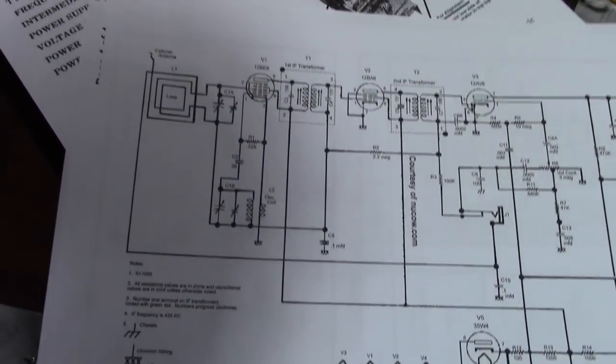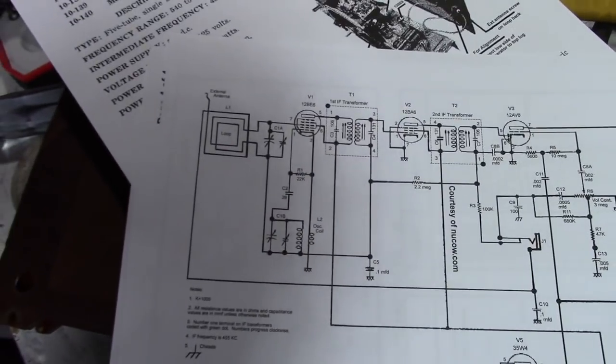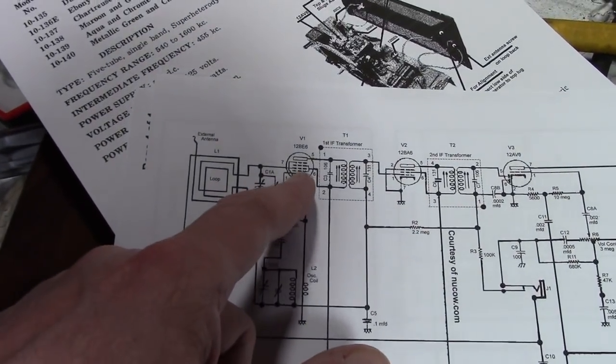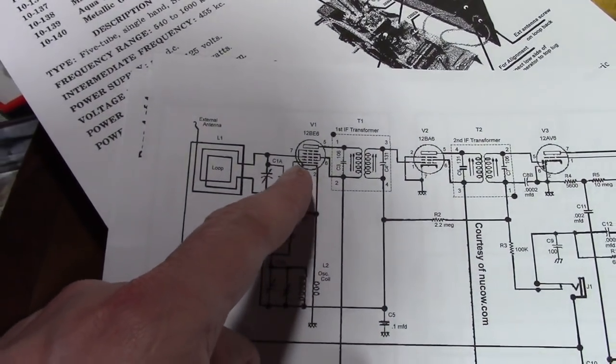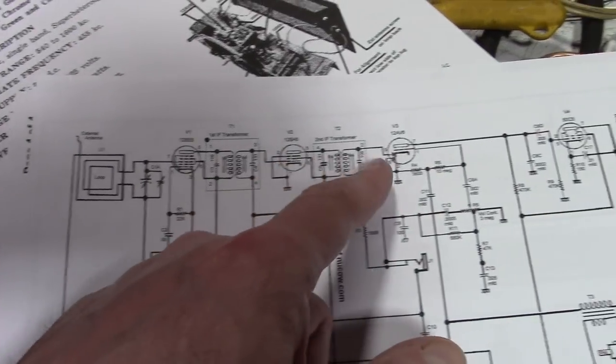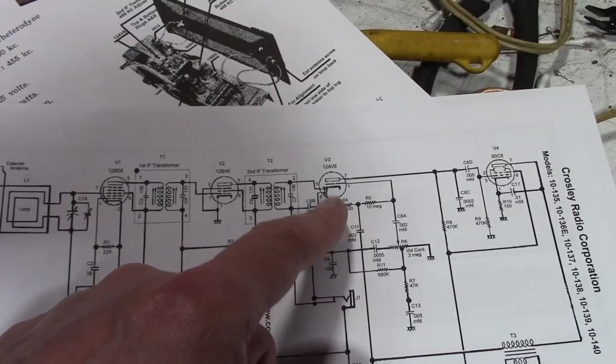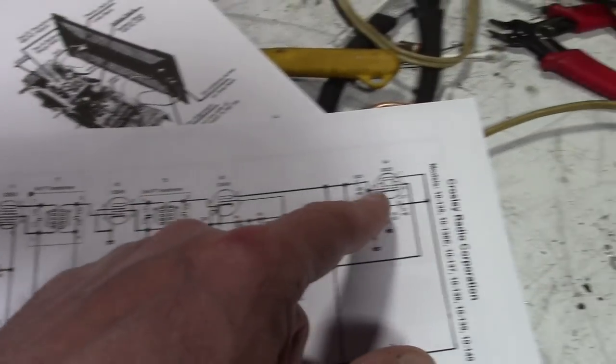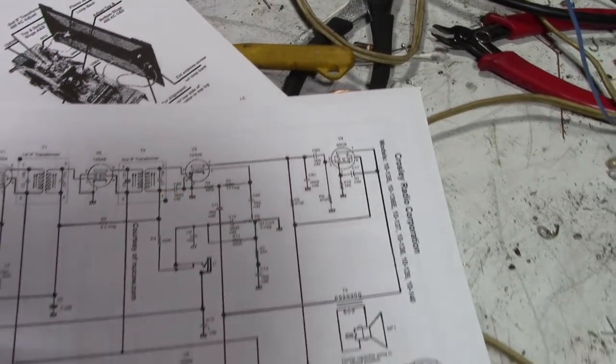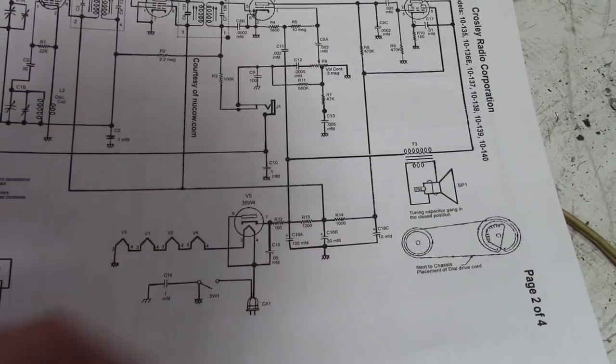So, here's the schematic. Conventional All-American 5: oscillator converter tube, one IF stage, detector and AVC diode, and first audio amp, and then the output tube and rectifier.